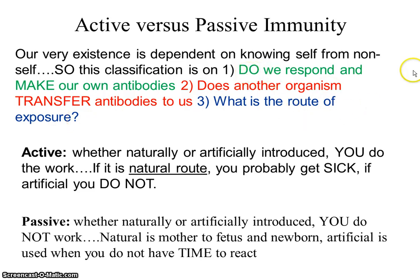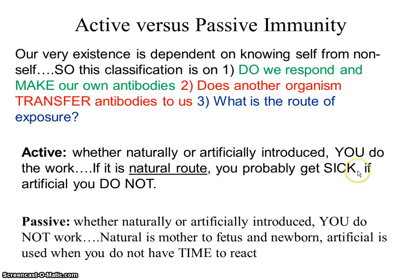Do we make our own antibodies? If we do, it's active. Does another organism transfer antibodies to us? That's passive. Whether naturally or artificially introduced, you do the work in active. If it is a natural route, you probably get sick. Naturally acquired active immunity is when you encounter a pathogen and get sick from it.